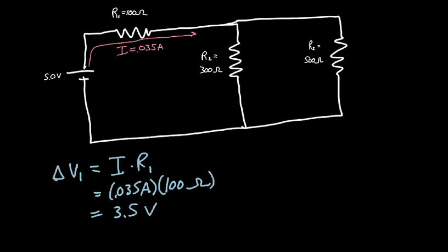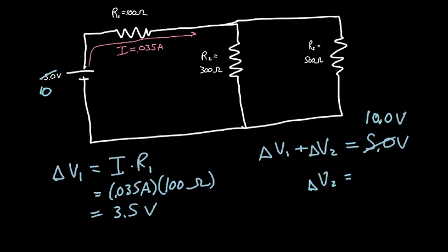And then earlier we wrote an equation that delta V1 plus delta V2 or plus delta V3 has to give us 5.0 volts. Except I'm remembering now there was actually a 10 volt battery, not a 5 volts. So it should be 10.0 volts. There we go. Now delta V1 is 3.5 volts. So that makes delta V2, the voltage drop across resistor 2, equal to 6.5 volts.